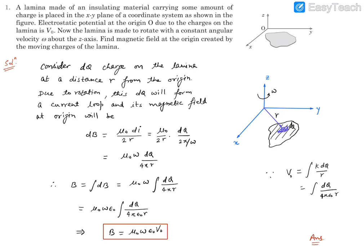Here is equation number one. It reads: a lamina made of an insulating material carrying some amount of charge is placed in the xy plane of the coordinate system as shown in this figure. This is the y coordinate, this is the x axis, and this is the z axis. So this plane is the xy plane.